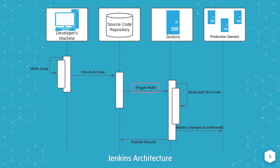In this diagram, I show the communication going from the source code repository to Jenkins, but this isn't always the case. Sometimes Jenkins is configured to pull the source code repository for new changes, and any time it detects new changes in a particular repository, that will also trigger a build. But it's important to note that it's always best, if possible, to push new data to Jenkins rather than having Jenkins consistently pull the source code repository, because that might put an unnecessary load on the source code repository system.